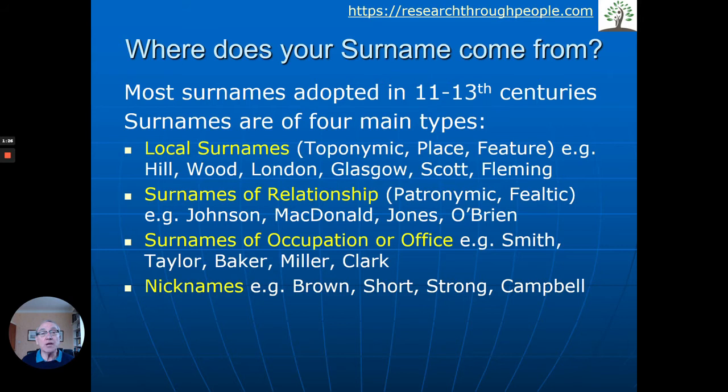Someone from Scotland who went to live in England might carry that place name. The second big group is surnames of relationship. Typically the son of a father would get a name connected to the father's first name. In England, if the father's name was John, the son would be called Johnson. In Scotland, 'Mac' means son, so instead of 'Donald's son' it became MacDonald. In Wales they tended to use the possessive, so instead of William's son it would be Williams, or Jones. Similarly in Ireland, which also had O'Brien, meaning grandson of Brien.